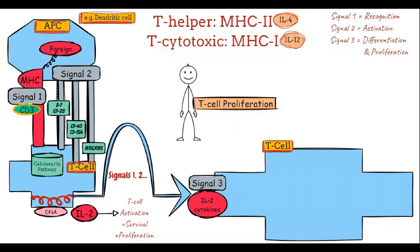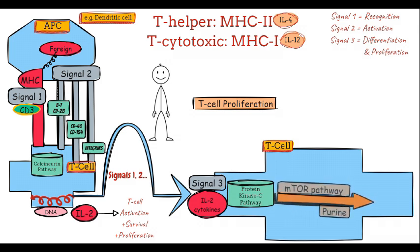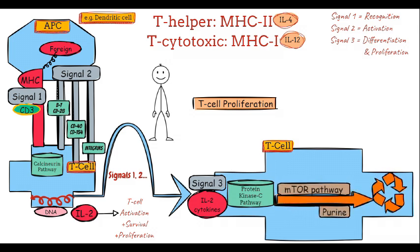For example, IL-12 directs the T-cell to become a Th1 cell, critical for cellular immunity, while IL-4 encourages differentiation into a Th2 cell, which supports antibody production. Signal 3 also activates intracellular pathways like the protein kinase C pathway and the mTOR pathway. These pathways drive the T-cell through the cell cycle, enabling it to proliferate rapidly and expand the immune response to meet the challenge.